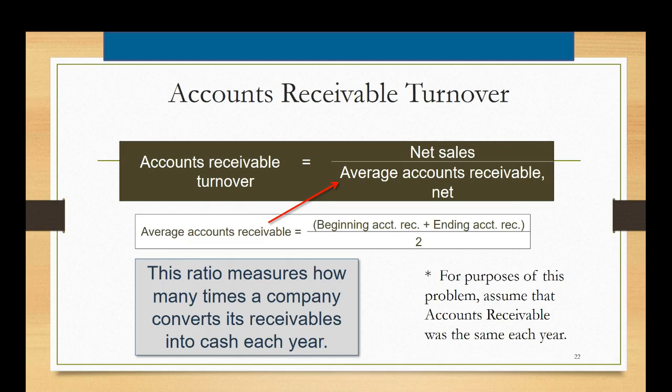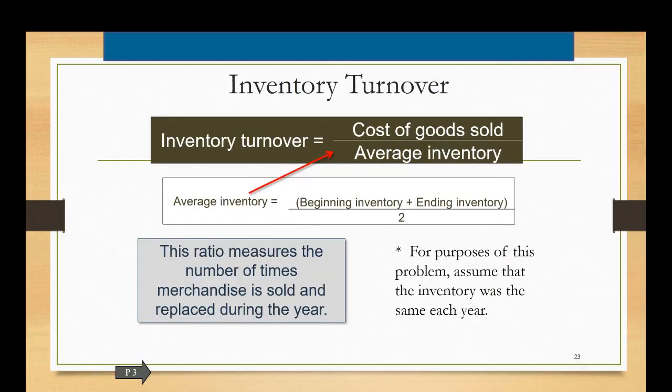For purposes of this problem assume that accounts receivable is very similar and so there is really no need to calculate the average, just use this year's receivables. Similarly inventory turnover is another liquidity ratio and it's computed by taking cost of goods sold divided by the average inventory. And once again for purposes of this problem assume that the inventory was similar or the same each year so there's no need to average the bottom. This ratio measures the number of times that merchandise is sold and replaced during the year.